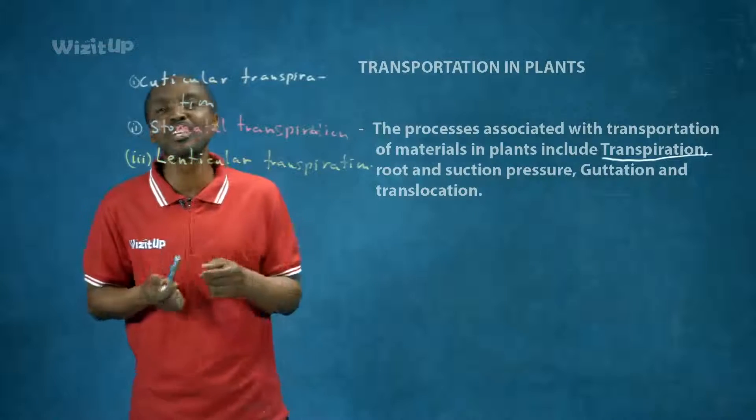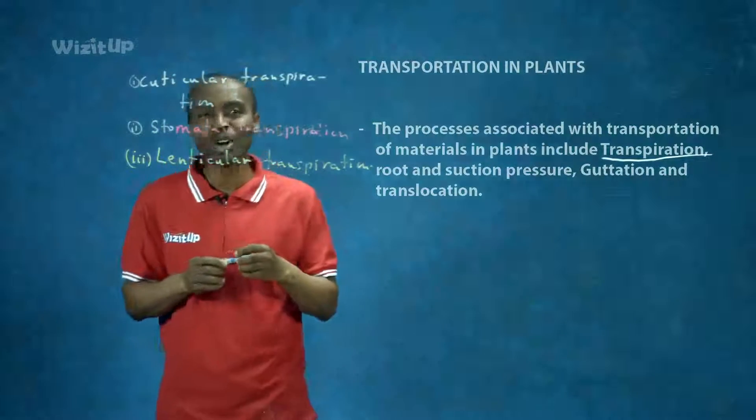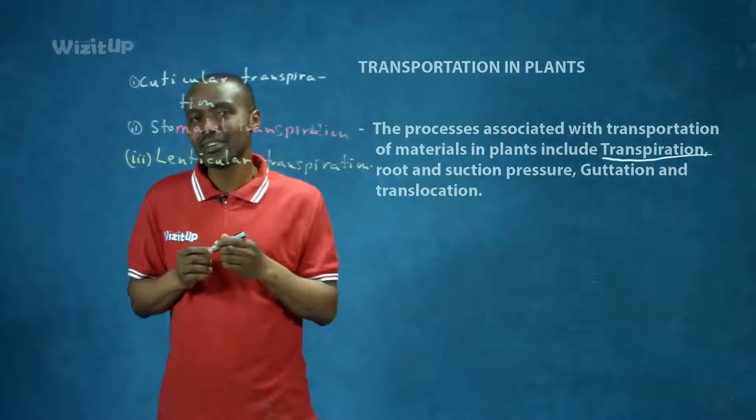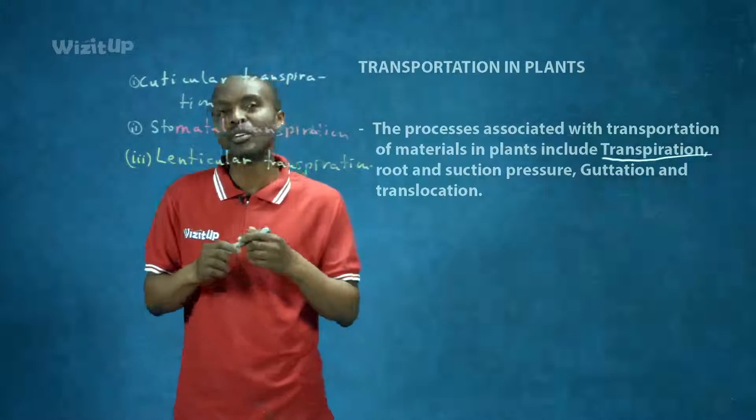Lenticular transpiration is a type of transpiration which occurs when water is lost through openings called lenticels, which are found in the stem or in the roots.